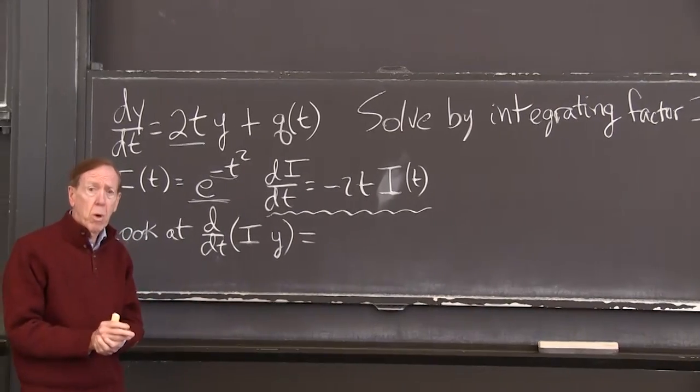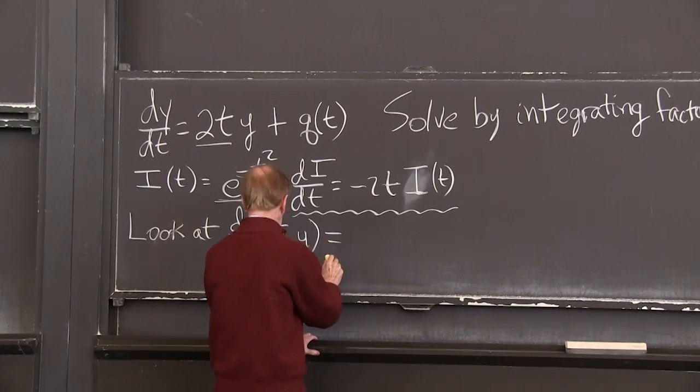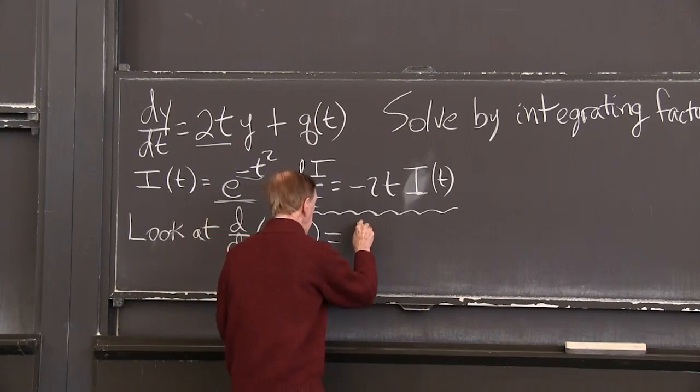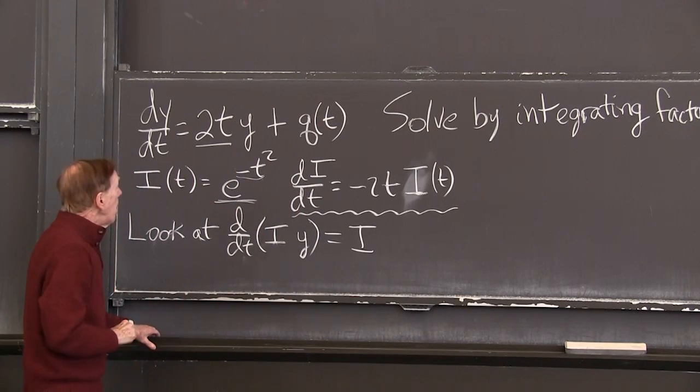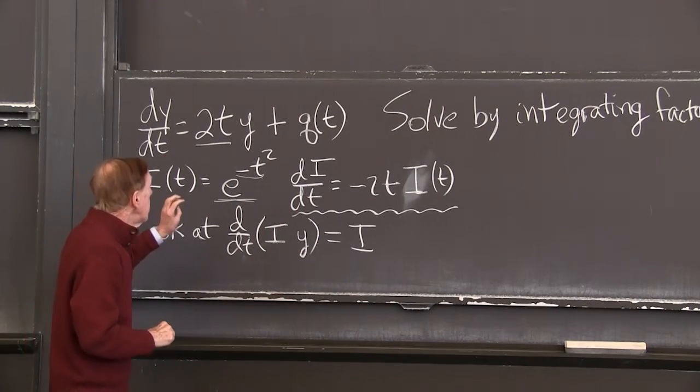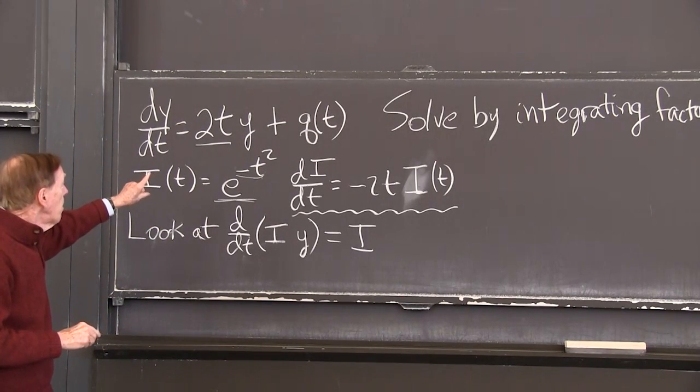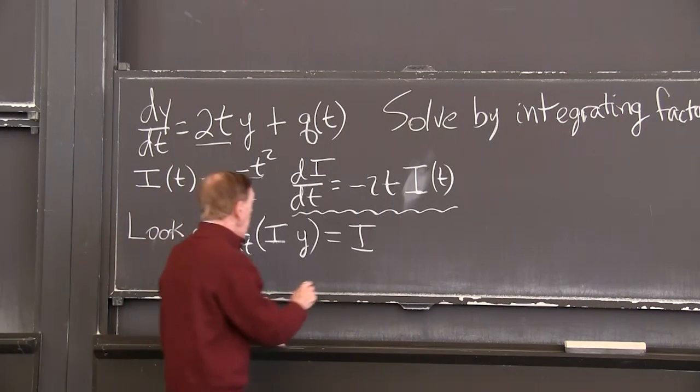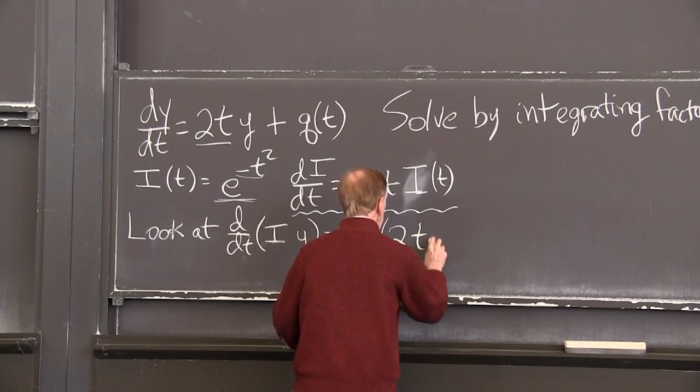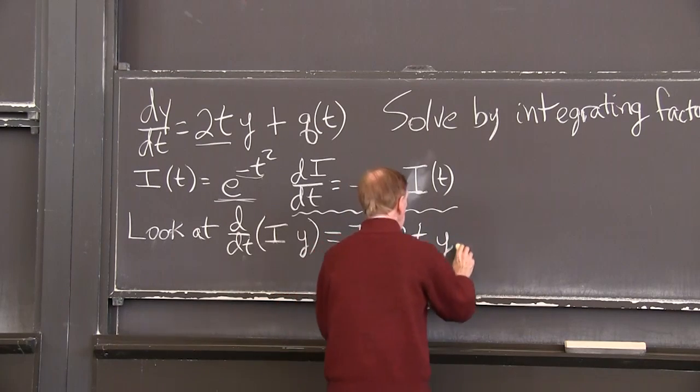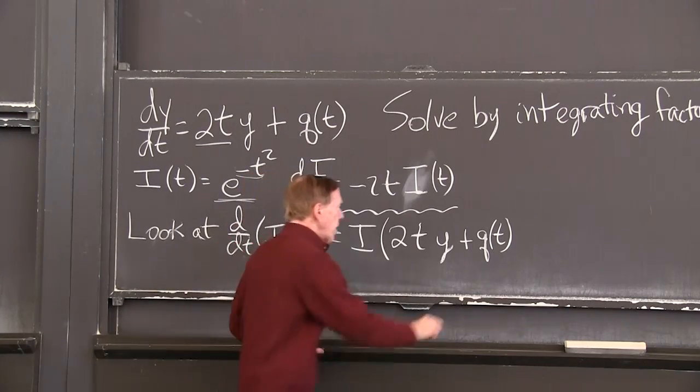Got to use the product rule. So that will be i, so i dy dt. But dy dt is, we can take dy dt from the equation, i times 2t y plus q of t. So that's,